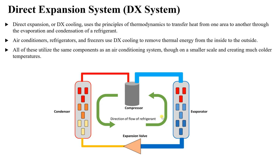Then the refrigerant is brought in through an expansion valve, which expands it and cools it down. An evaporator then evaporates the refrigerant from liquid to gas form, exchanging heat with the room, and the cycle repeats. Now let's look at the eight types of DX systems you can encounter.